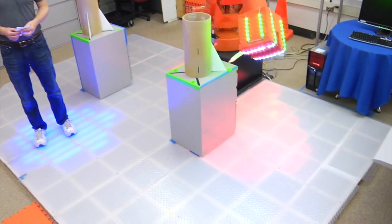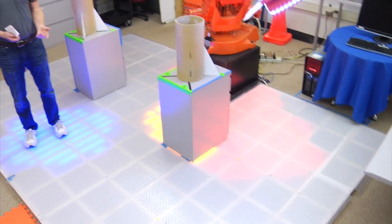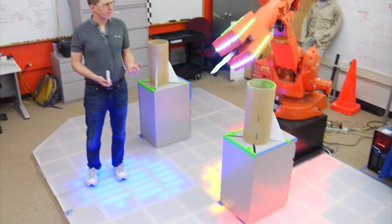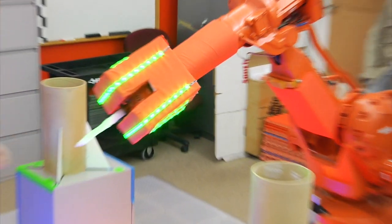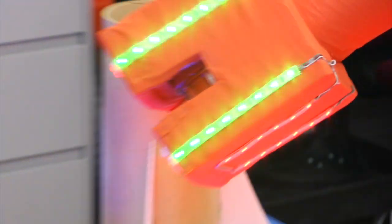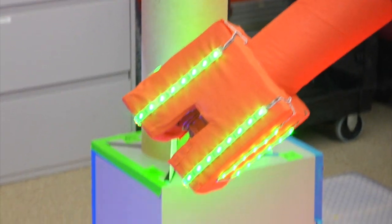This is the Intelligent Work Cell project, and this is basically research on how robots and people can work together. When you have a robot like this, they're generally kept separate from people, typically using some kind of physical system.